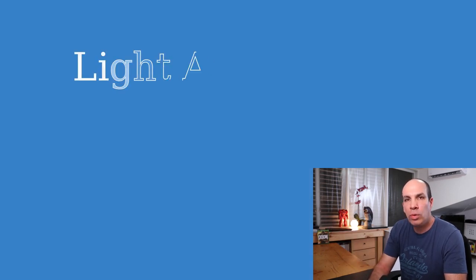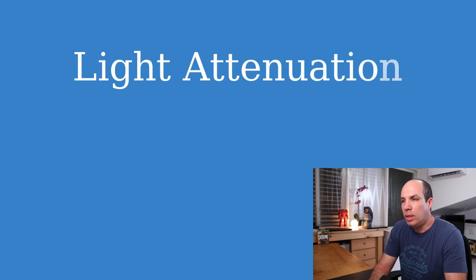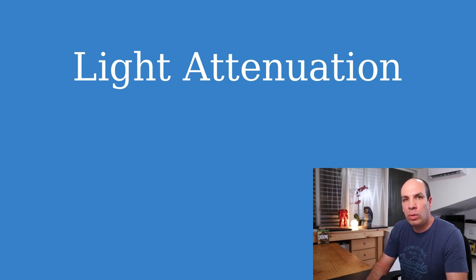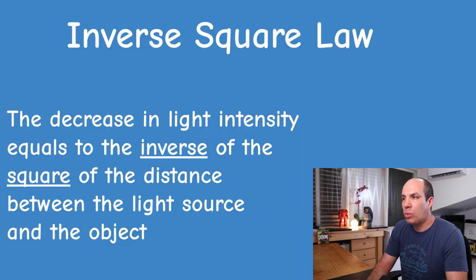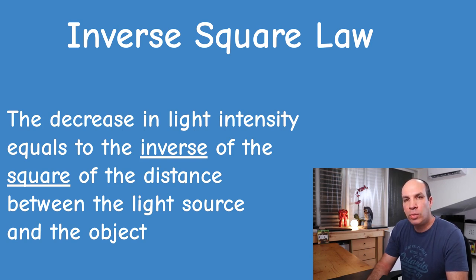This phenomenon is called light attenuation and we will need to calculate an attenuation factor in order to mimic the behavior of point lights. In the real world, the light attenuation follows the inverse square law in physics, which says that the decrease in light intensity equals the inverse of the square of the distance between the light source and the object.